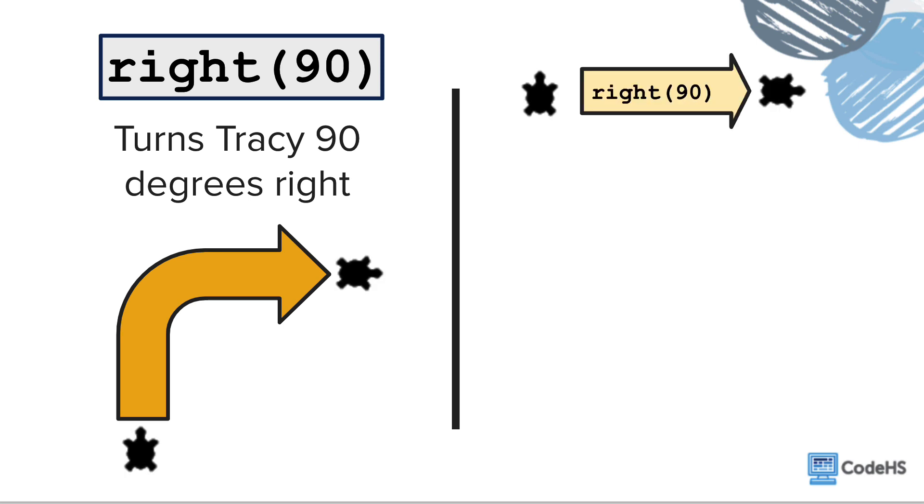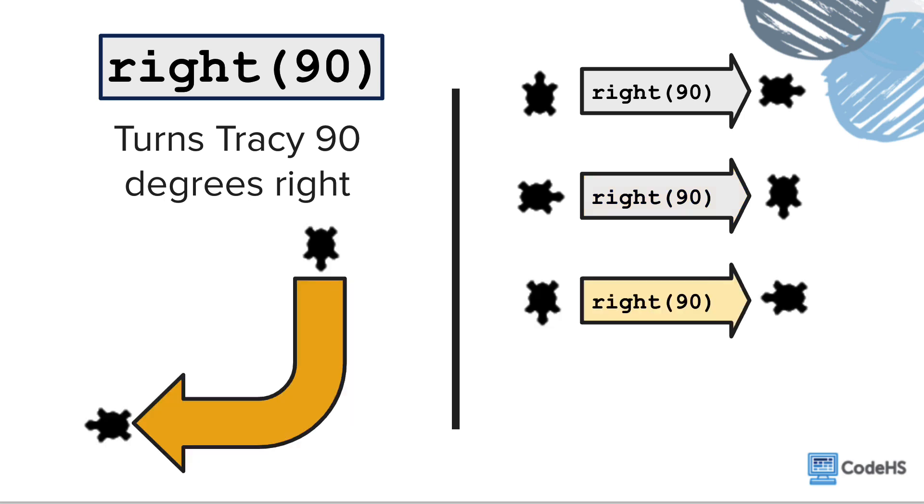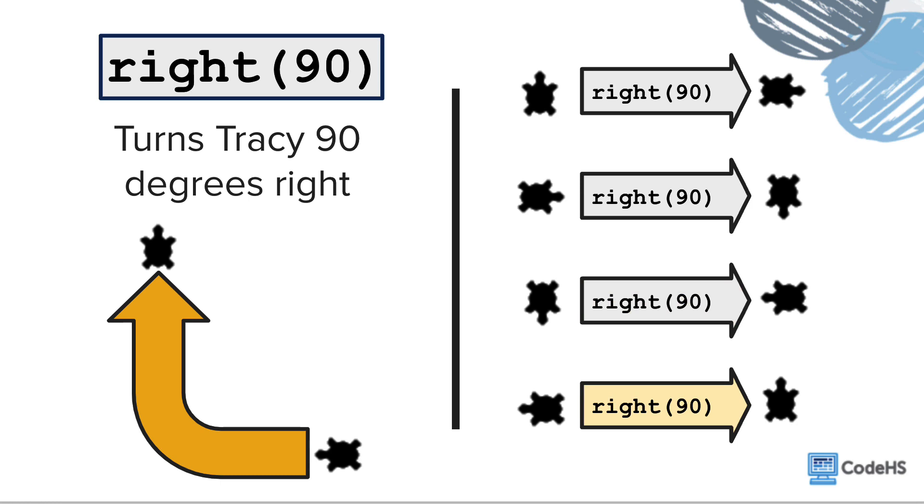So if Tracy is facing up and we call the right command, she will turn 90 degrees and end facing right. If Tracy is facing right and we call this command, she will end facing down. If she's facing down and we call the right command, she will end facing left. And if she's facing left and we call this command, she will finish facing up. Now it's your turn to use parameters and the new left and right commands to get Carol and Tracy through the jellyfish forest.